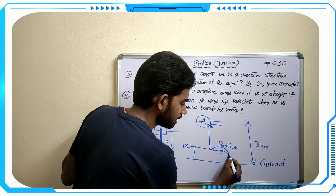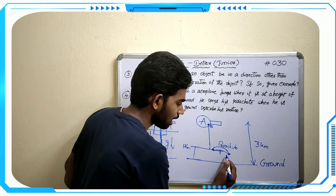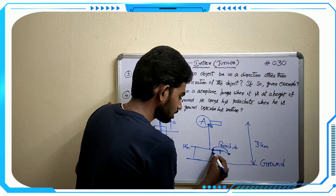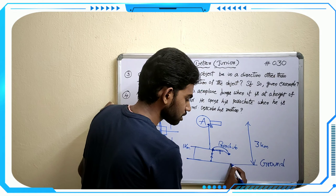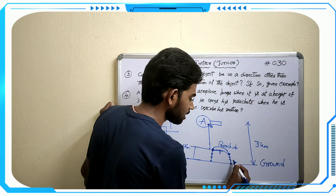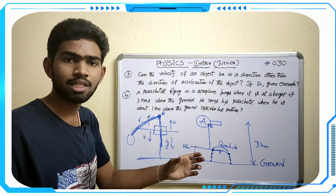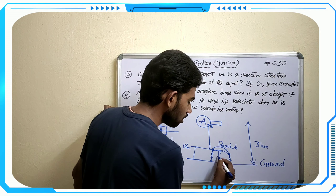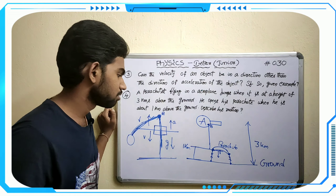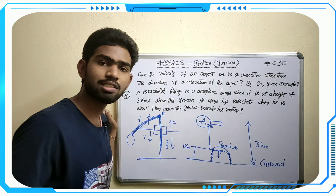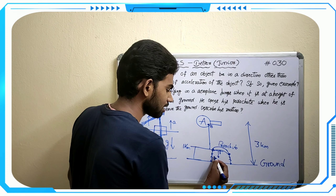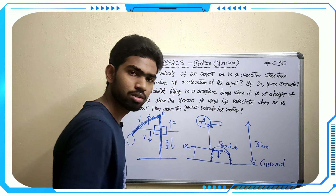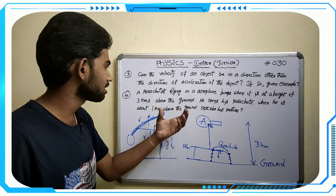When the parachute opens, the drag force from the parachute ends is equal to the gravitational force, so he reaches a state of equilibrium. The gravitational force pulling him down is balanced, so he can descend very slowly and reach the ground with much less difficulty — he can land very easily.